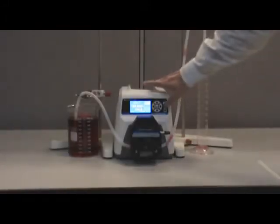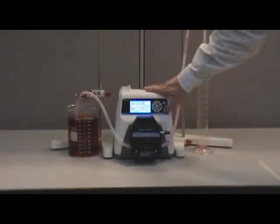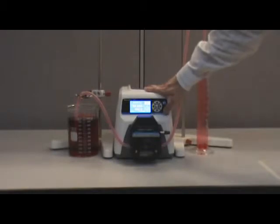Press and hold the prime key to prime the pump and fill the tubing with water. Water in the graduated cylinder should be emptied back into the beaker to ensure an accurate measurement during the calibration process.